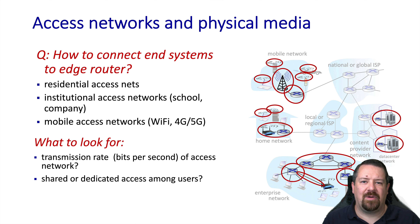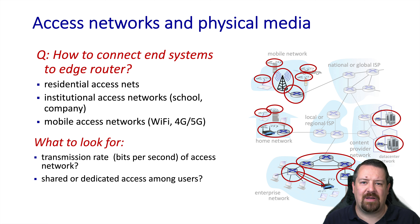There are a few key properties to consider when discussing an access network. One is the bandwidth, or access speed, measured in bits per second — note that is different than bytes per second. A particular access network may also be either shared or dedicated, meaning the bandwidth specified may belong to one subscriber or may be shared amongst multiple subscribers.